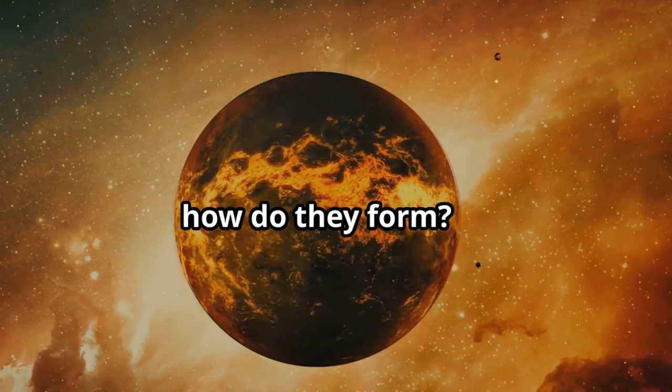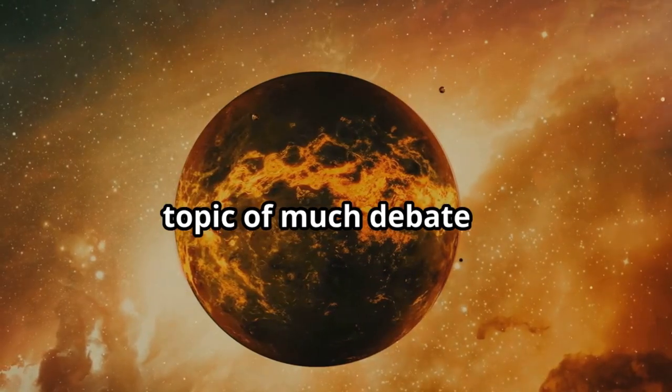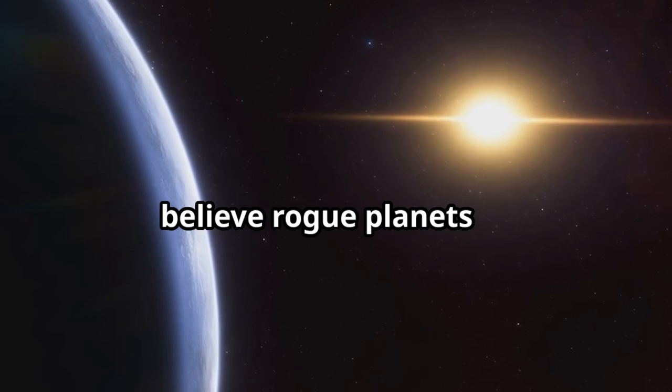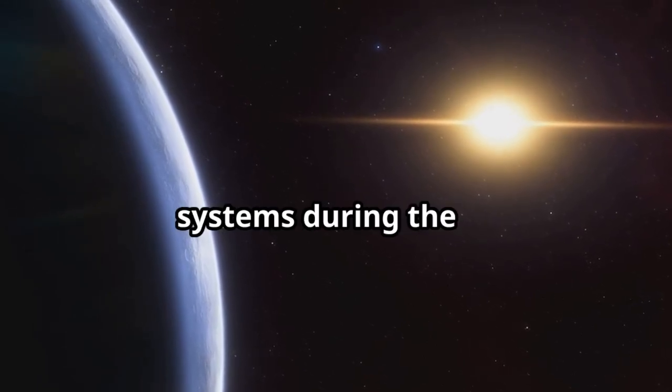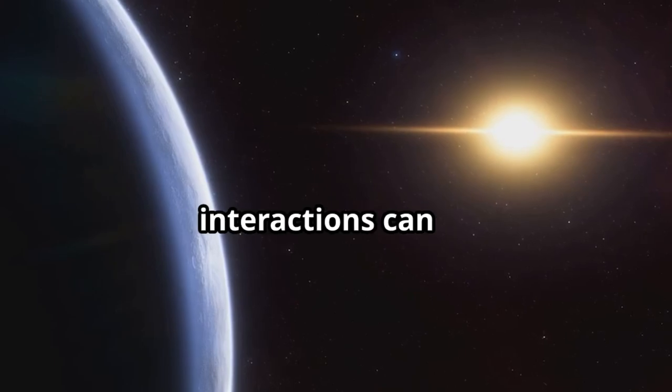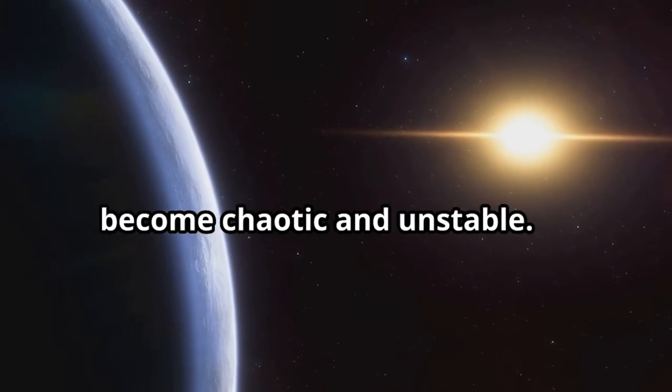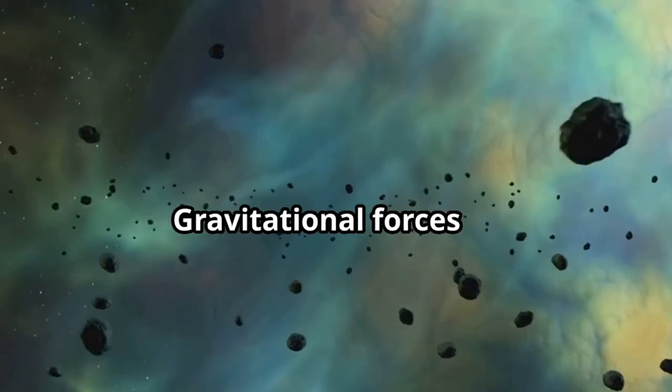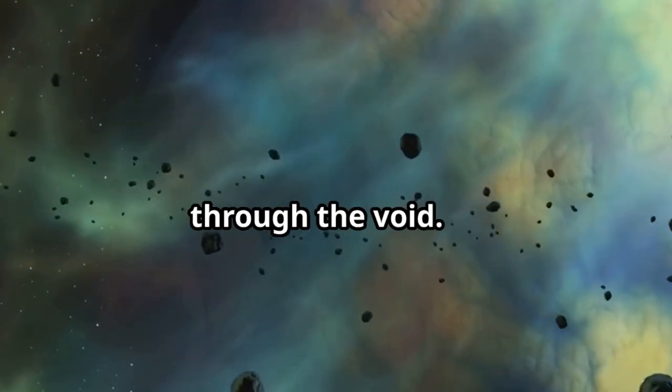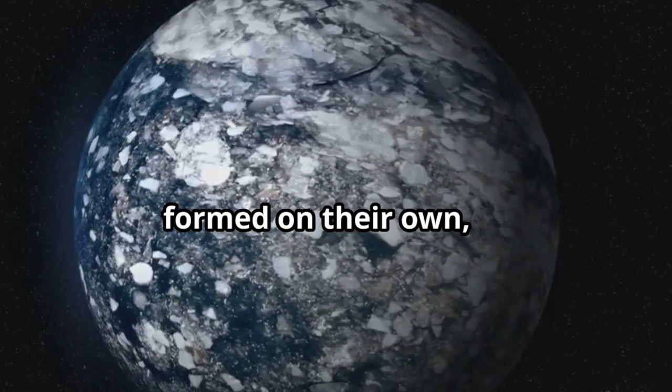So, how do they form? The formation of rogue planets is a topic of much debate and research among astronomers. Some scientists believe rogue planets are ejected from their home star systems during the early stages of planetary formation, when gravitational interactions can become chaotic and unstable. Gravitational forces from other planets or stars can toss them out, sending them on an endless journey through the void.